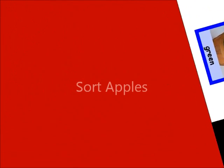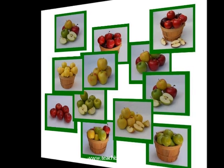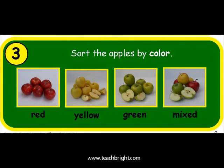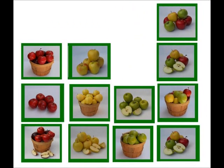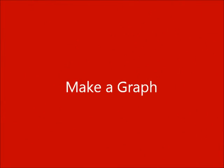Another graphing activity I like to do begins with a sort. I give kids a collection of photocards — in this case, they're apples — and there are many different attributes in this collection. I begin with one, and this is color, so students are going to sort that set by color. I have them place their groups in vertical columns so that it begins to resemble a bar graph.